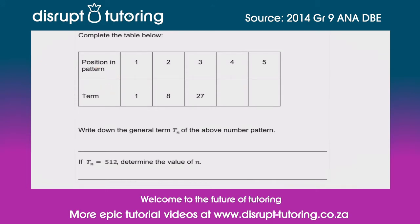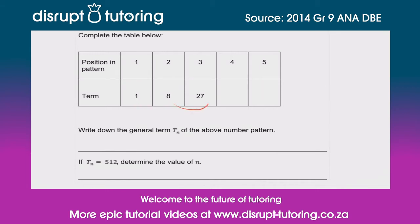The pattern is going to be 1, 8, 27. I can already see what type of sequence this is — I hope you can too. They ask us to write down the general tn of the above number pattern. Before we do that, let's complete these two. What we would typically do is check for a common difference between the terms — this is 7 and this one is 19 — so there clearly isn't a common first difference.